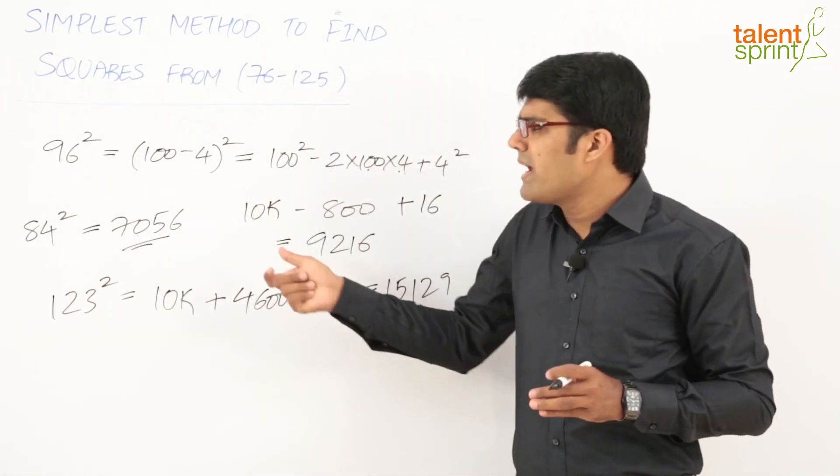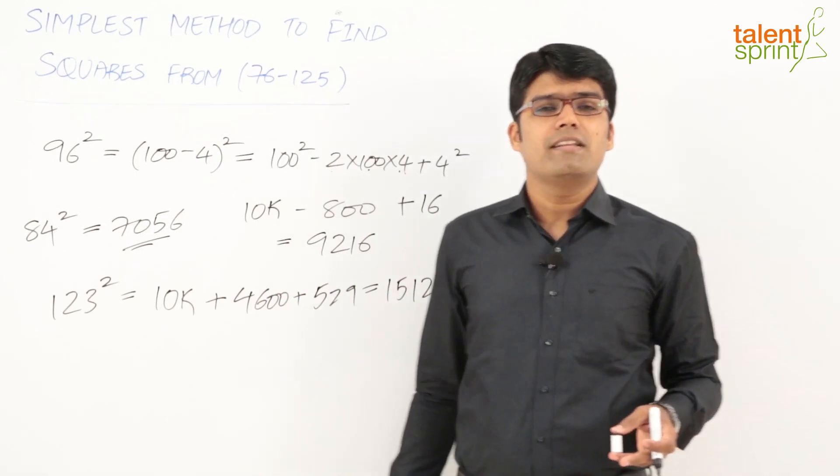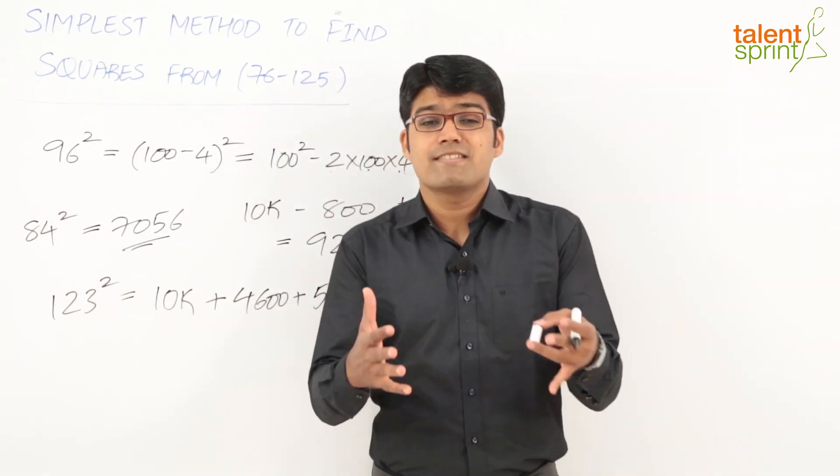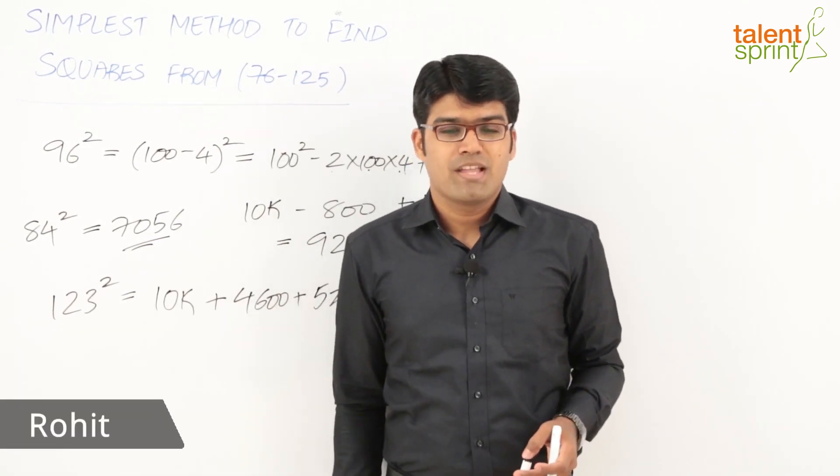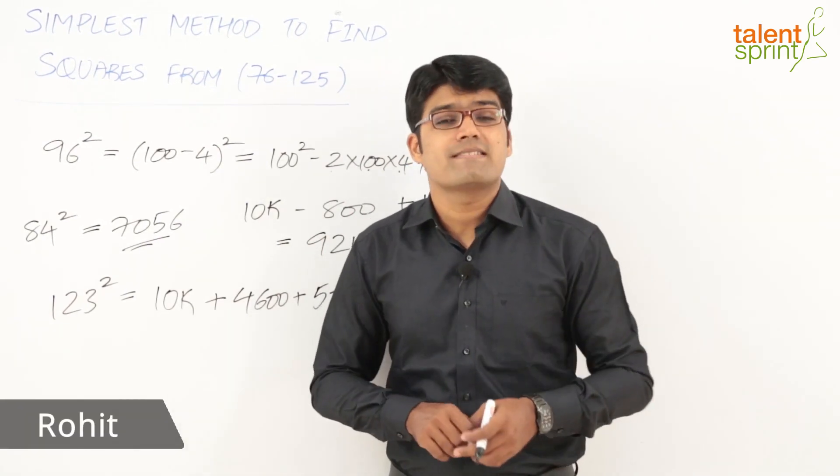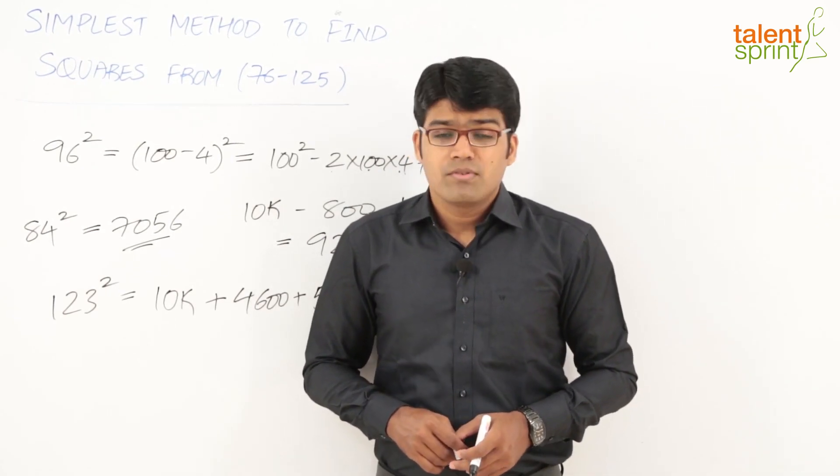So with this, you know how to get the squares from 76 to 125. I hope all of you have followed this simplest method to get the squares here, and you use it effectively in your calculations from now.